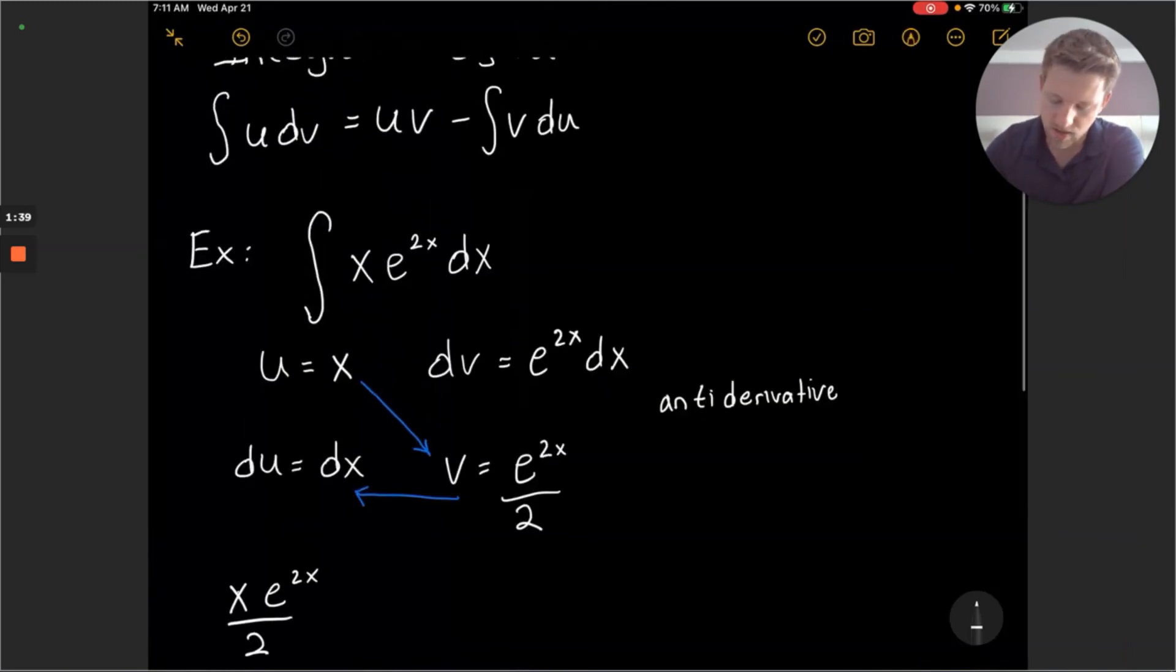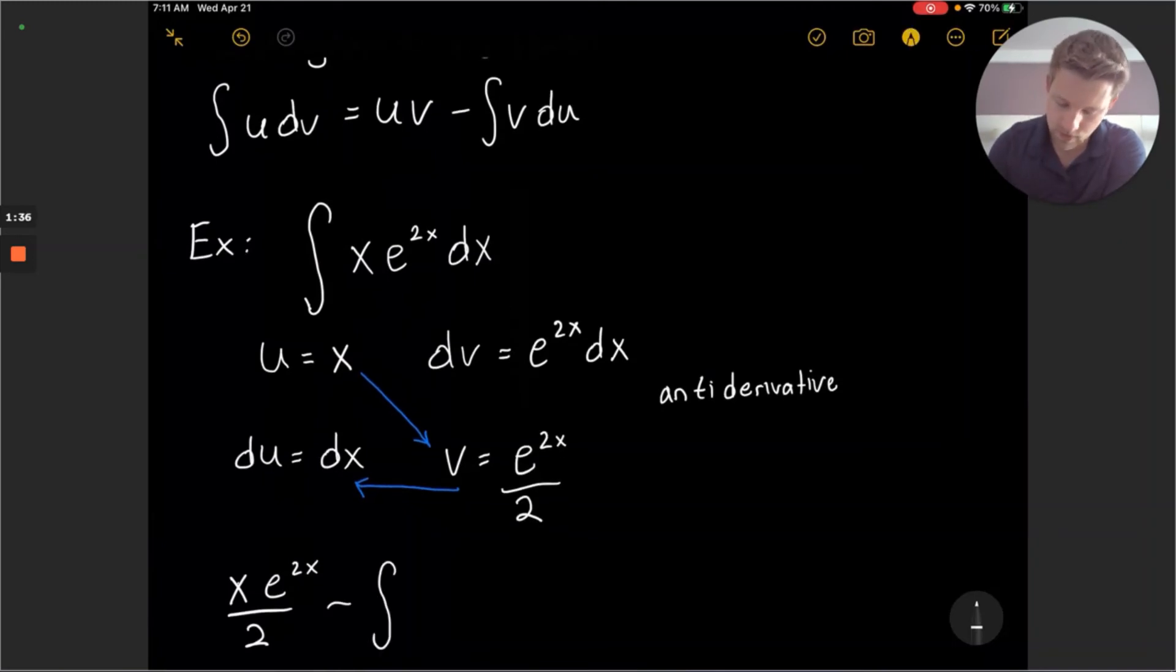And then minus, we'll have the integral of e to the 2x. That 2 here can be coming out, but we'll keep it in the integral for right now. Just a constant. And then times the du, which we know is dx.